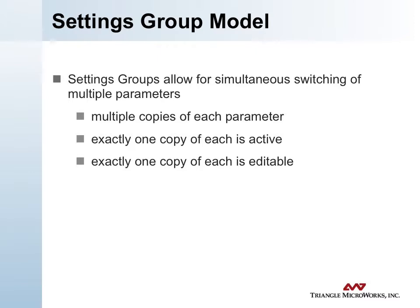Exactly one copy of each parameter is active at a time and one copy is editable. The client can have an active group running, modify the settings within the editable group, and then later make that editable group become active. This model is meant for things like relays where you have to set a group of parameters simultaneously — you can't set them individually; you need to set them as a bank or group for the process logic to operate correctly.